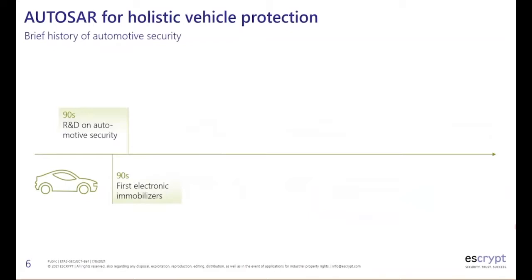Automotive security didn't start in the 1950s but rather in the 1990s, with first R&D topics on automotive security. It was also in the 90s that the first electronic immobilizers were introduced — immobilizers that didn't only rely on a physical key fob but where additional electronics was introduced into the key fob in order to authenticate it towards the vehicle.